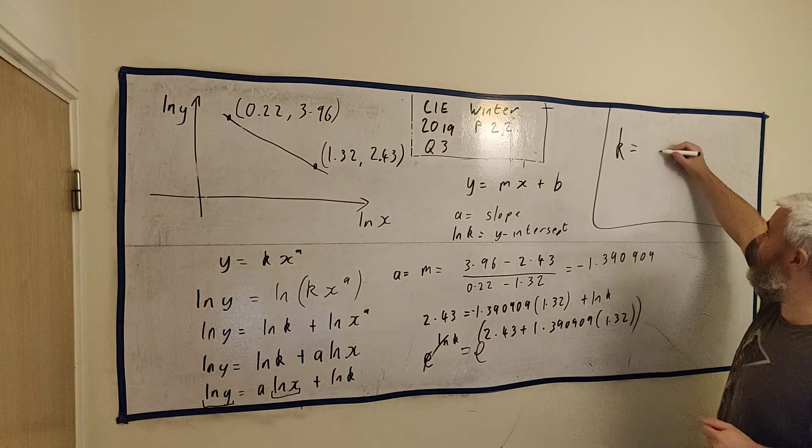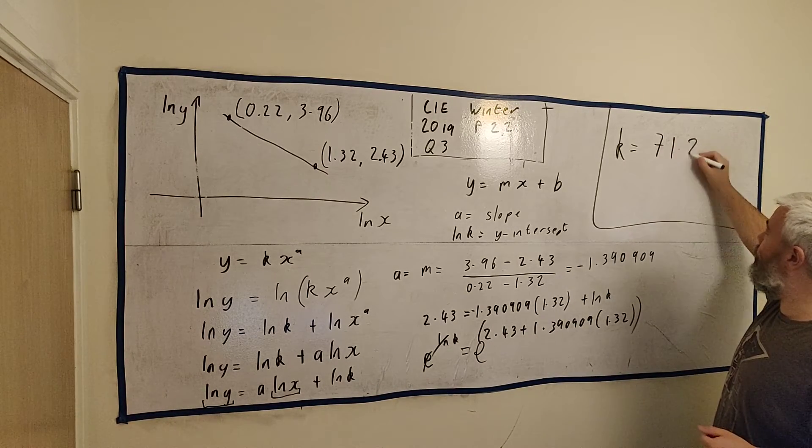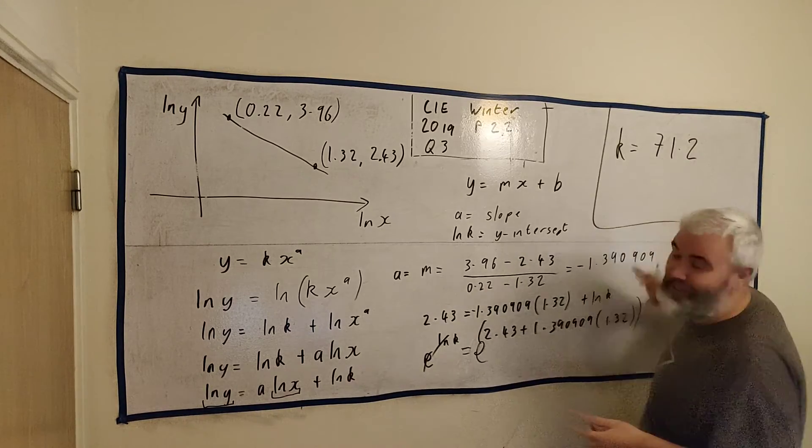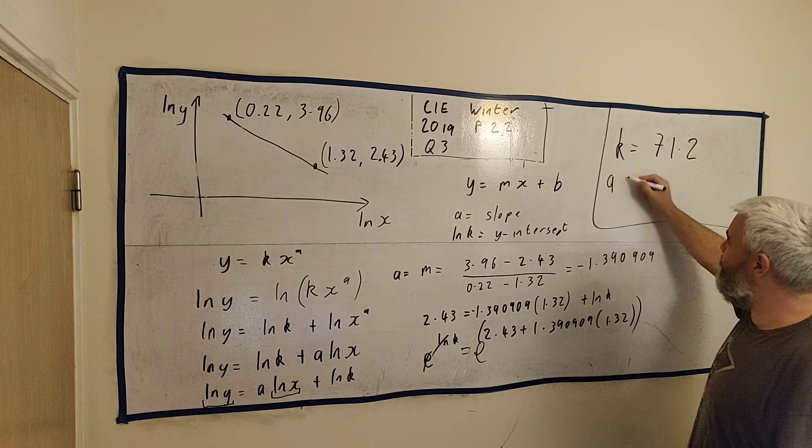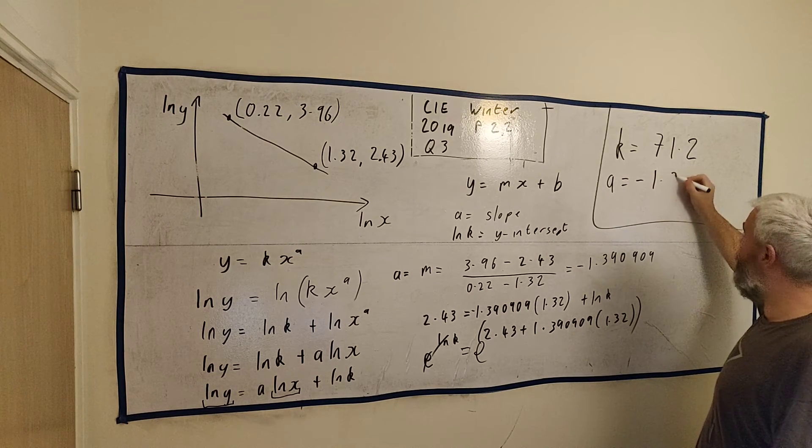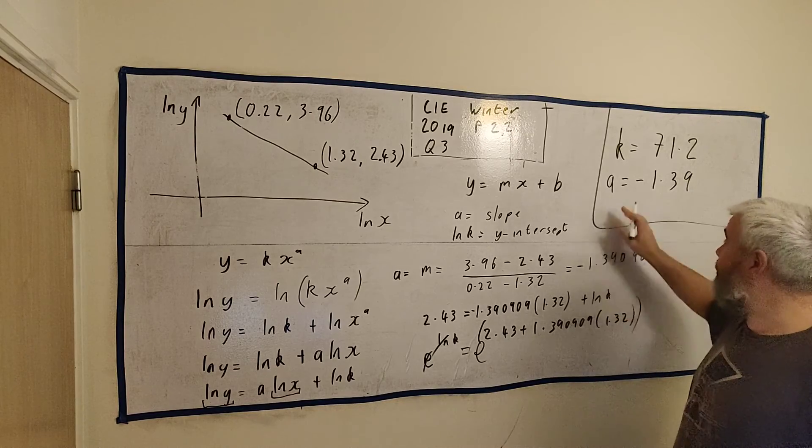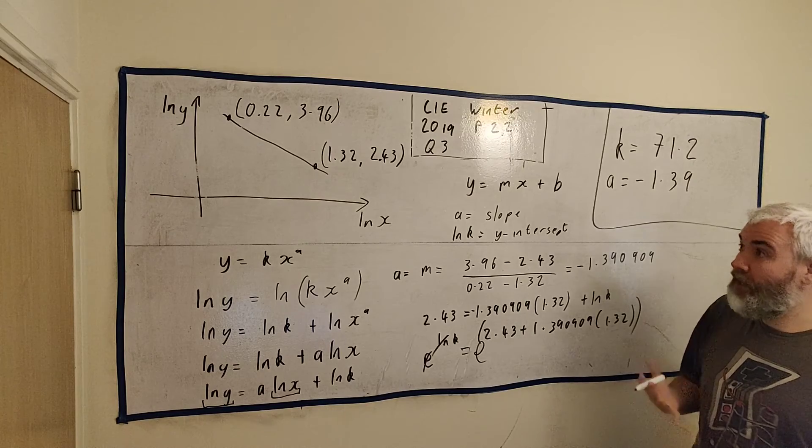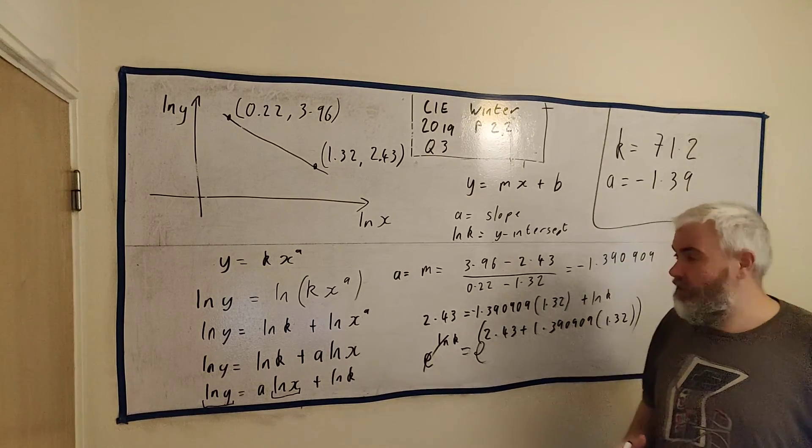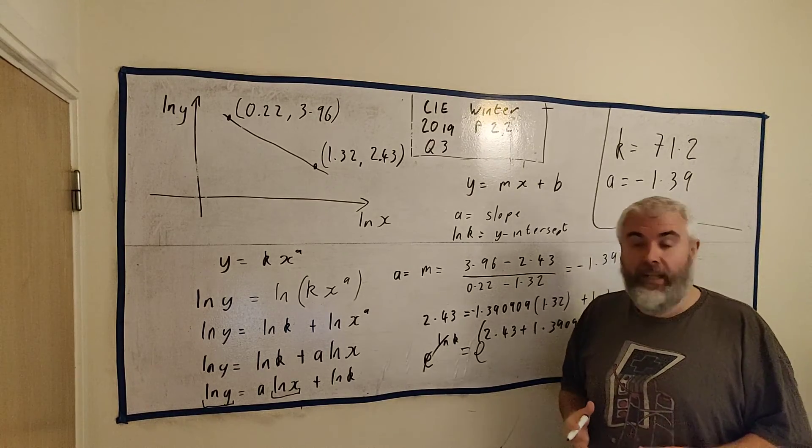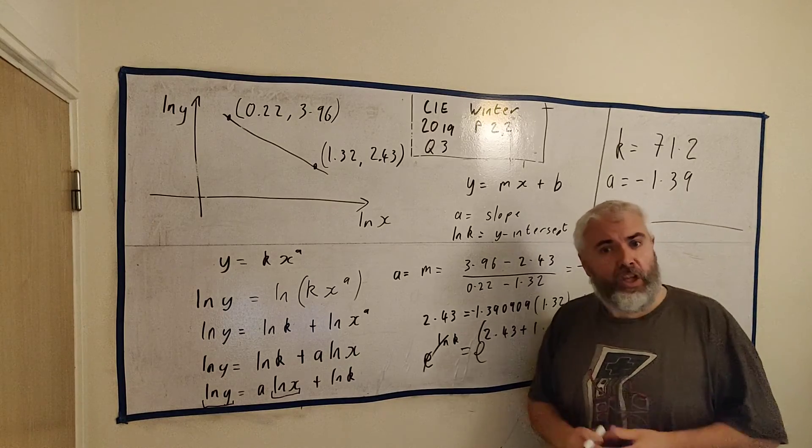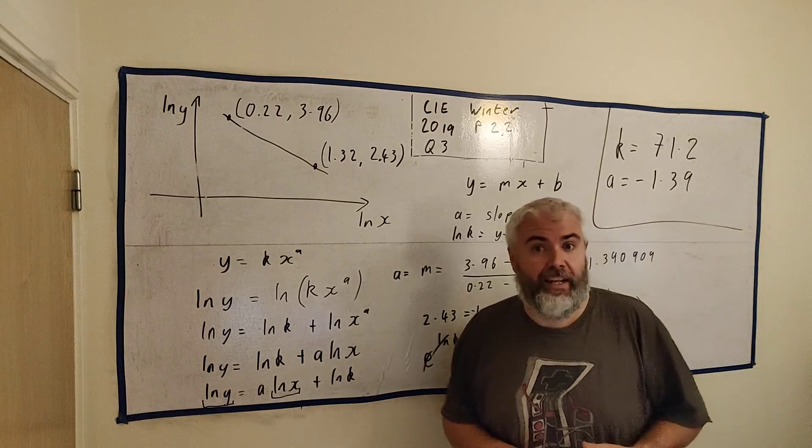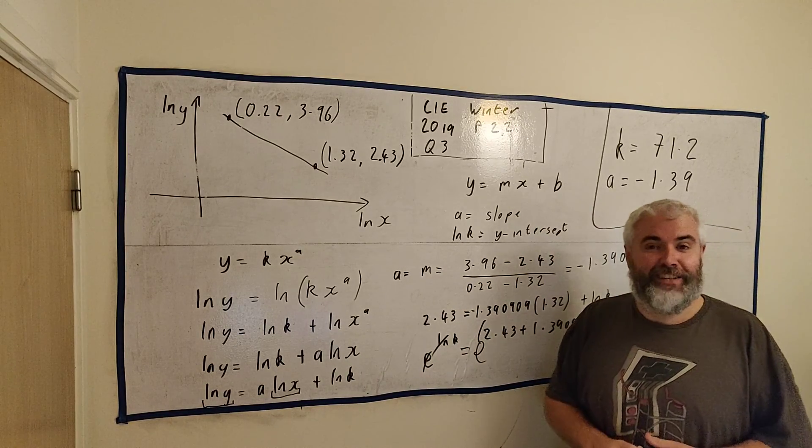And k is equal to all of this on a calculator. And that will come out as 71.2. And that's the three significant figures. And we go back to where a was. a is equal to minus 1.39, the three significant figures. So that answers that question, a very tricky one, a very good one. I love that question. Short if you know how to do it. If you don't know how to do it, oh, you'd be quite lost. So if you have any questions about anything I did there, please put them in the comments below and I'll do my best to answer.